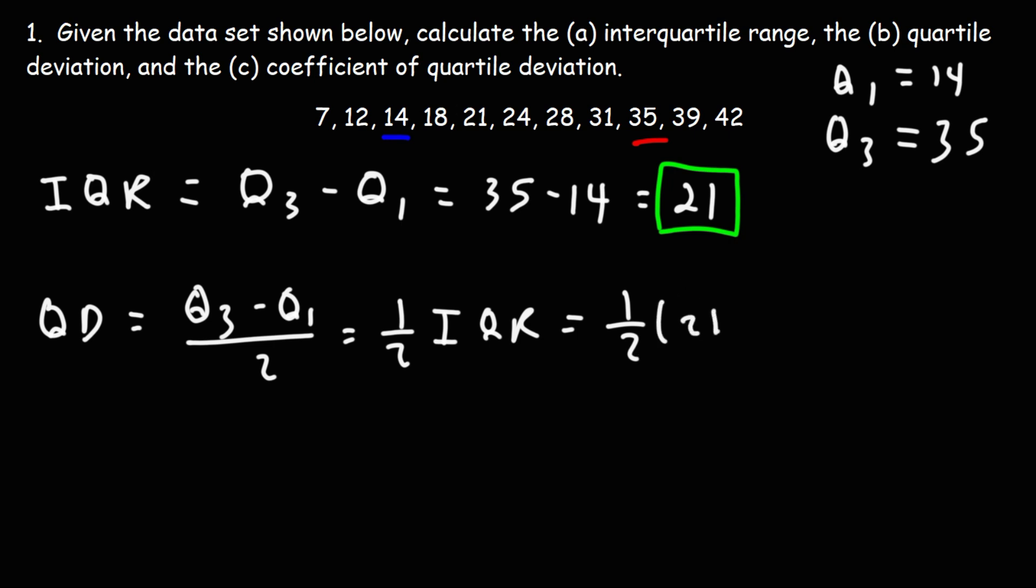So it's one half of 21, which will give us 10.5. So that is the quartile deviation.